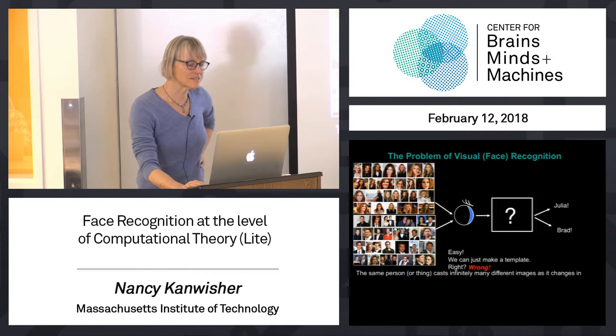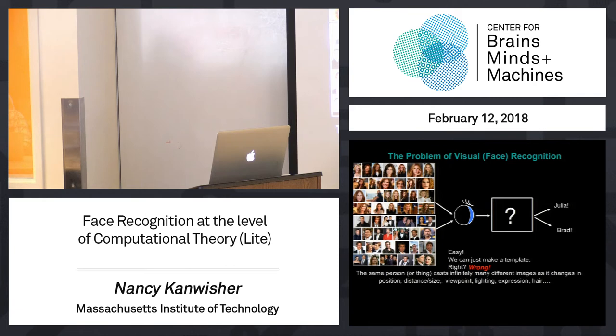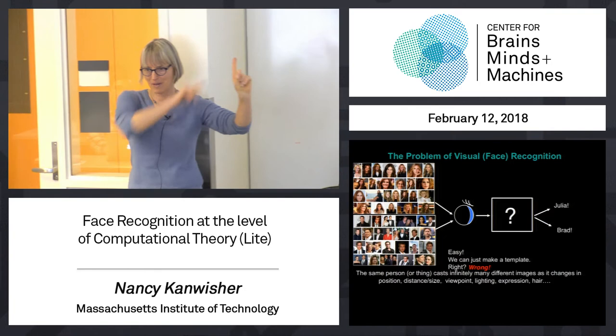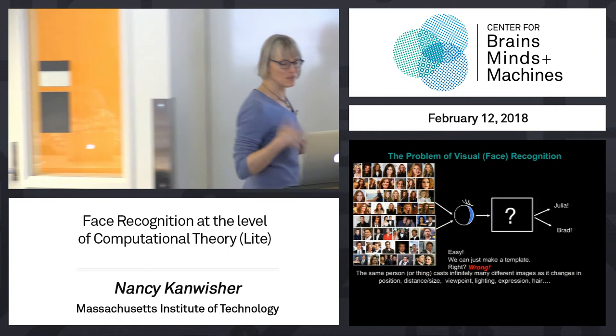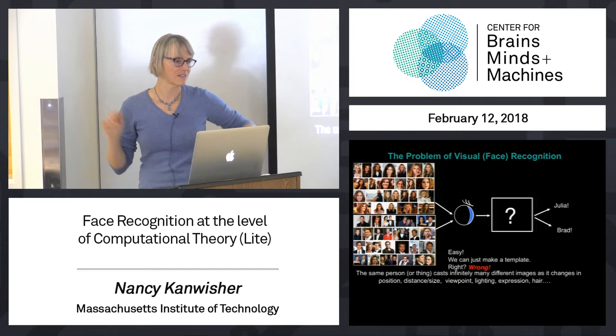The simple statement of this is that the same person or thing can look infinitely many different ways as it changes in all these different viewing conditions — position on your retina, distance and size. Think how big my face is to you right now versus how small it is. Those are other image changes. And if you fixate on my finger, my face is now landing on different parts of your retina. So all those are changes even before we get to viewpoint and expression and hair and all that stuff. That's why this is a really big challenge for all of visual recognition, not just face recognition.